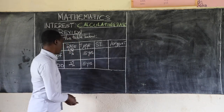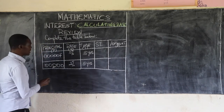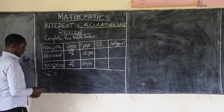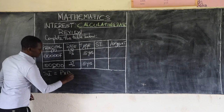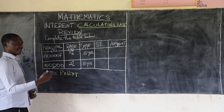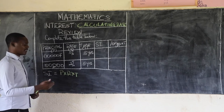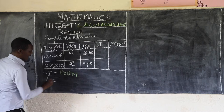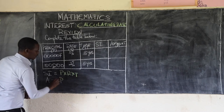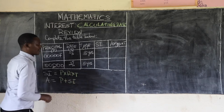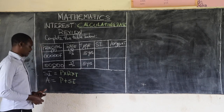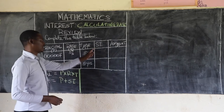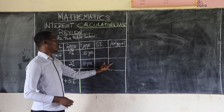My dear friends, remember we have the formula we need to use. The simple interest equals principal times rate times time — that is the formula we use to calculate simple interest. And the amount, by formula, equals principal plus simple interest, since we are talking about simple interest. Now let's use these formulas to calculate the simple interest and the amount for both examples.